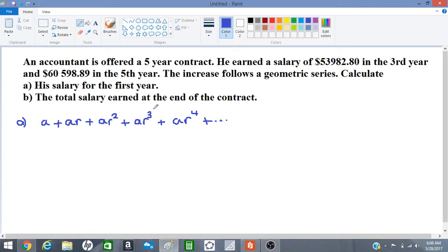So we have the third year salary. That would be AR squared. So we have AR squared equal to 53982.80. And we have the fifth year salary here. So this is the third year, this is the fifth year. That is AR to the power of four equal to 60598.89.